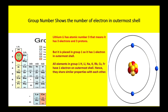The group number basically always shows you the number of electrons present in the outermost shell. For example, lithium is an element placed in group 1A with atomic number 3. As atomic number shows the number of electrons and protons, lithium has three protons inside the nucleus and three electrons revolving around it. But as it is placed in group 1A, it has just one electron in its outermost shell. On the right-hand side you can see the atomic structure of lithium, where the first shell contains two electrons and the second shell, the outermost, contains one electron.